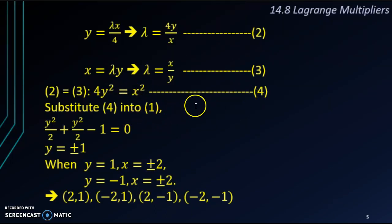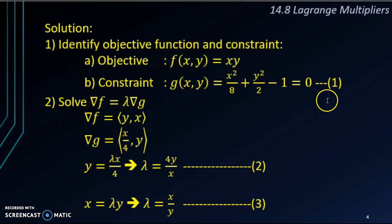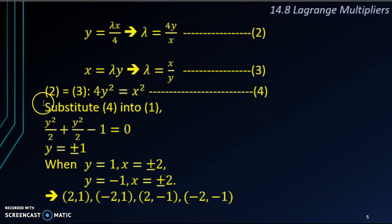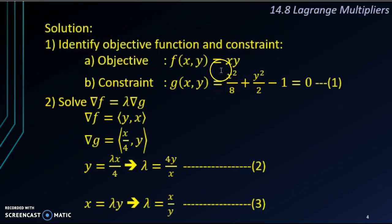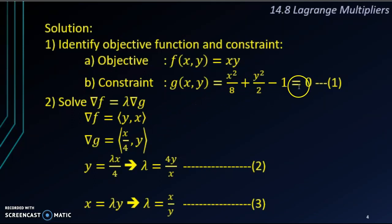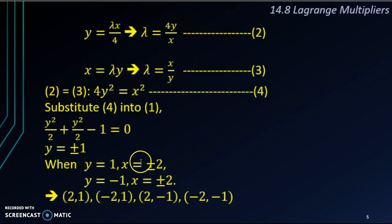We substitute equation 4 into equation 1, which is the constraint. Replacing x squared with 4y squared in the constraint gives 4y squared over 8 plus y squared over 2 minus 1 equals 0. Simplifying, 4y squared over 8 becomes y squared over 2, so we get y squared over 2 plus y squared over 2 minus 1 equals 0, which gives y squared minus 1 equals 0. Solving this, we get y equals positive and negative 1.